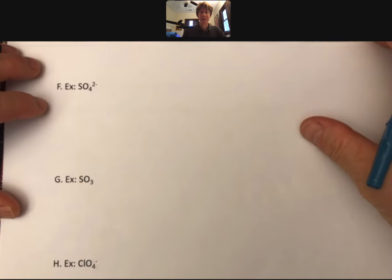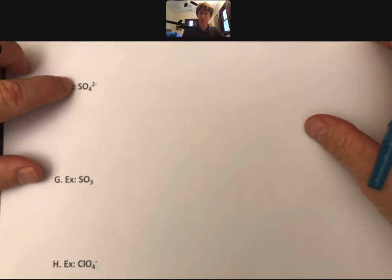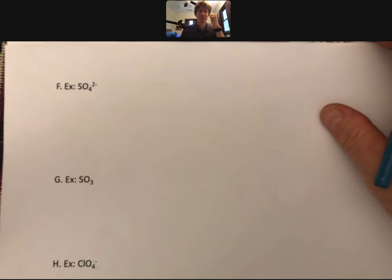Let's do a couple more examples so I can show you how this works. This is the sulfate ion, and our process is: draw a Lewis structure, assess how many electron groups are around the central atom, draw its shape or understand its shape, and then draw dipoles.